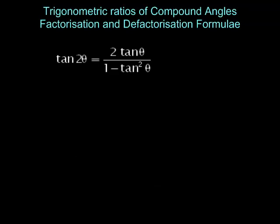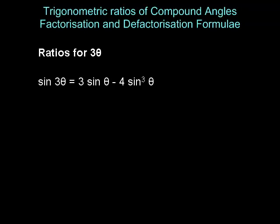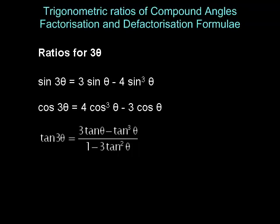Tan 2 theta is 2 tan theta upon 1 minus tan squared theta, and therefore tan 4 theta is 2 tan 2 theta upon 1 minus tan squared 2 theta. The results for angle 3 theta are: sin 3 theta is 3 sin theta minus 4 sin cubed theta; cos 3 theta is 4 cos cubed theta minus 3 cos theta; and tan 3 theta is 3 tan theta minus tan cubed theta upon 1 minus 3 tan squared theta.